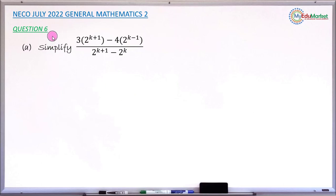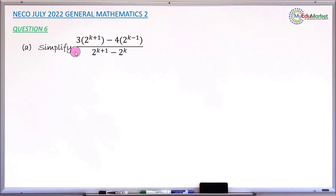This is NECO, July 2022, General Mathematics Paper 2, and we are answering question number 6a. The question asks to simplify a fraction involving indexed numbers.